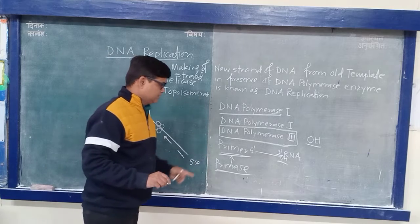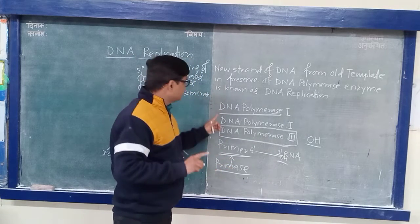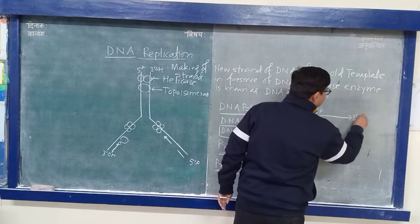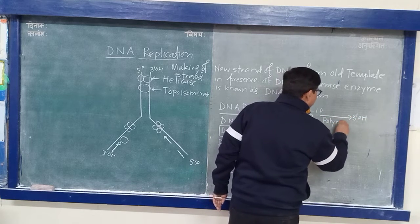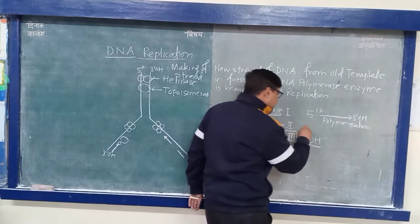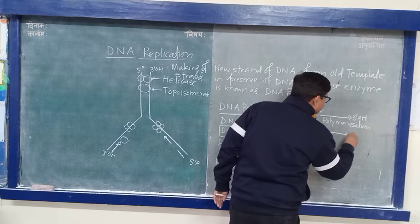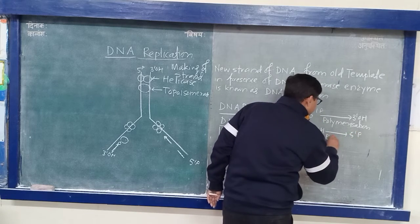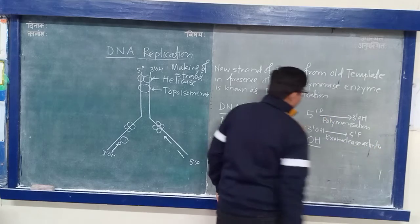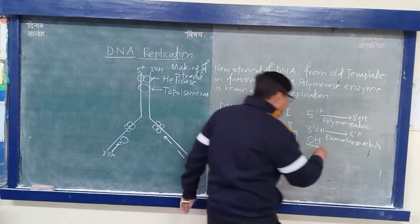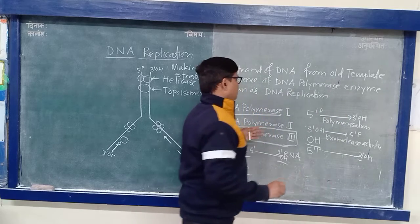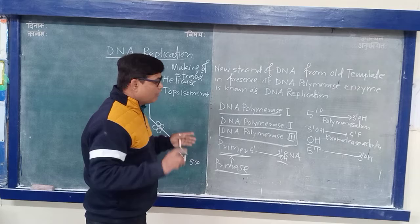DNA Polymerase 3 is mostly responsible for DNA synthesis. There are three activities in the case of DNA Polymerase: first is 5' to 3' polymerization for nucleotide addition; second is 3' to 5' exonuclease activity; and third is proofreading activity in the case of DNA Polymerase.